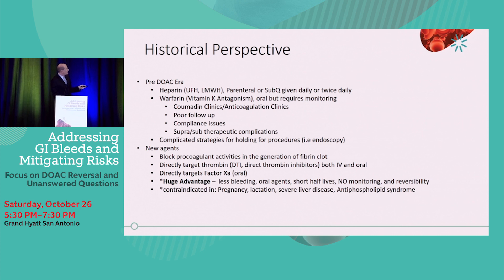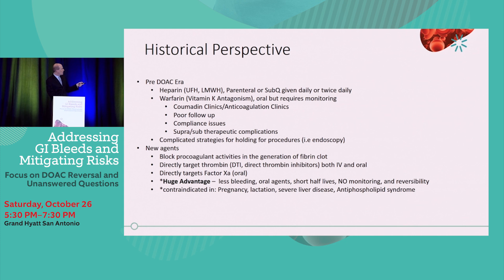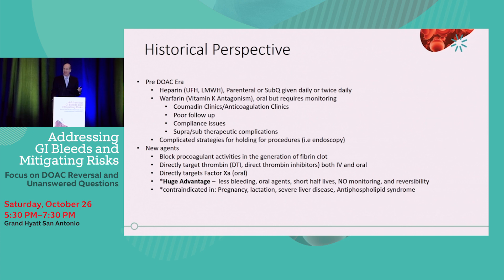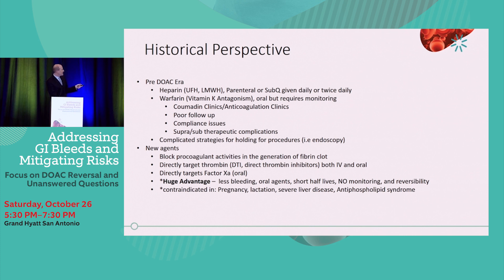These newer agents block the pro-coagulant activities in the generation of the fibrin clot. They either directly target thrombin or directly target factor Xa, and stopping either one halts the whole coagulation cascade. The huge advantage is less bleeding — this is true and has been proven — much less bleeding compared to coumadin. Less bleeding with the oral agents, much shorter half-life, no monitoring required, and now reversibility. They are contraindicated in pregnancy, lactation, severe liver disease, and do not have an indication for antiphospholipid syndrome.